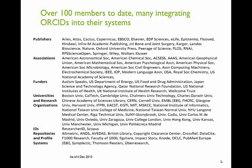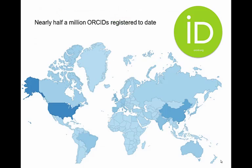Since ORCIDs have only been around for a little over a year, their future pervasiveness may not be apparent yet, but that's likely to change — it's ramping up pretty quickly. There have been almost half a million ORCIDs registered in the past year, and the pace has been picking up rapidly as publishers begin to integrate them. You can see here a map of the distribution of where they're most widely used. The U.S. is big, but also China and South Asia, and it's also very common in Europe. It's used all over the world, and I don't think there's any country on this map not represented by at least one ORCID.